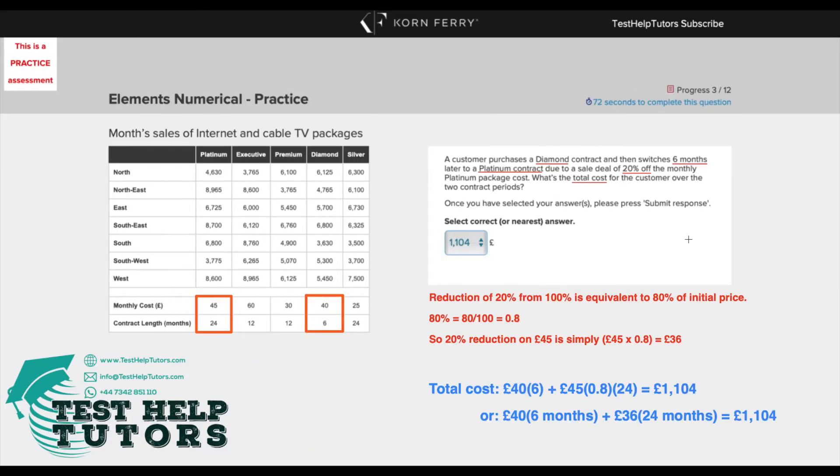I hope you've had a go. Our question states, a customer purchases a diamond contract and then switches six months later to a platinum contract due to a sale deal of 20% off the monthly platinum package cost. What's the total cost for the customer over the two contract periods? The two contracts are the diamond contract and the platinum contract.